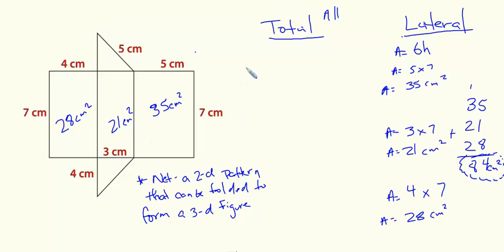Let's find the area of my two triangles. Let's write the formula for the area of a triangle: one half base times the height. So I have one half, the base of my triangle is right here, so this is three centimeters.